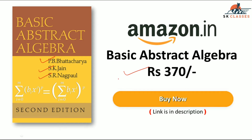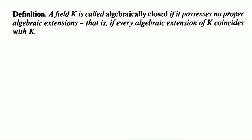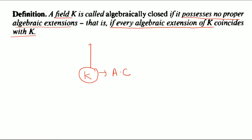Today we will see algebraically closed fields. Here is the first definition: a field k is called algebraically closed if it possesses no proper algebraic extension. That means no proper algebraic extension exists. If every algebraic extension of k coincides with k itself, then we say k is algebraically closed.